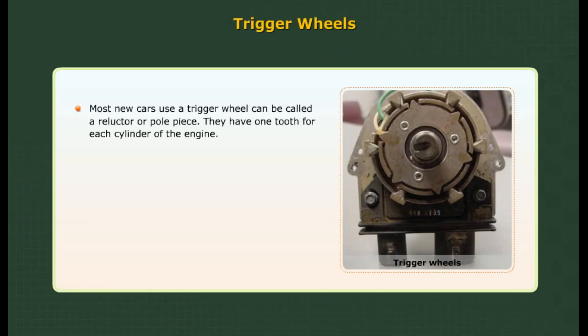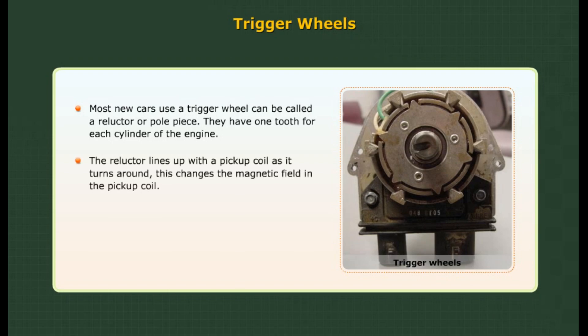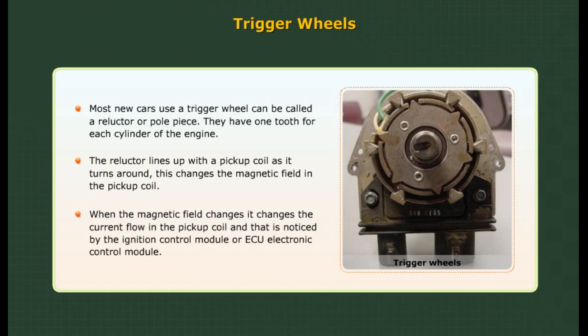Trigger wheels: Most new cars use a trigger wheel, also called a reluctor or pole piece. They have one tooth for each cylinder of the engine. The reluctor lines up with a pickup coil as it rotates, changing the magnetic field in the pickup coil. When the magnetic field changes, it changes the current flow in the pickup coil, which is detected by the ignition control module or ECU (electronic control module).